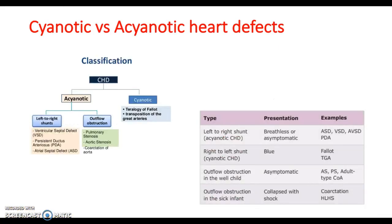Cyanotic versus acyanotic heart defects — why are left-to-right shunts acyanotic? Because the oxygen-rich blood in the left side of the heart is forced into the right side due to increased pressure, so oxygen-rich blood is still transported around the body. Other causes of acyanotic heart defects include ventricular septal defects and persistent ductus arteriosus, as well as outflow obstructions such as pulmonary stenosis, aortic stenosis, or coarctation of the aorta. Cyanotic heart defects are more likely to be right-to-left shunts, typically tetralogy of Fallot or transposition of the great arteries.